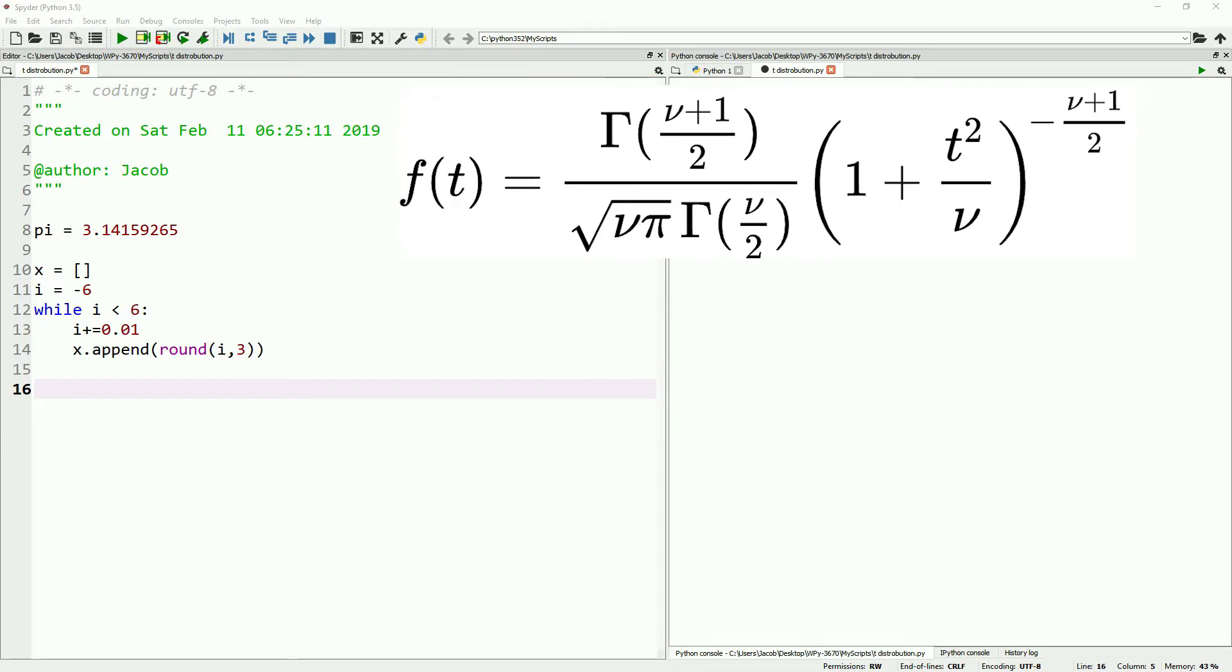Rather than write a function to calculate gamma, we're going to take a shortcut and import gamma from math. Now we'll define a function for our numerator. It takes the degrees of freedom, calculates what's inside the gamma function (degrees of freedom plus 1 divided by 2), plugs that into gamma, and returns the number.